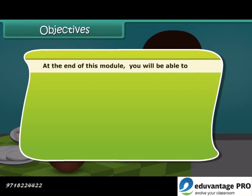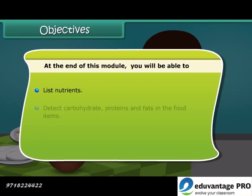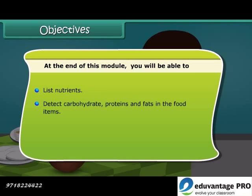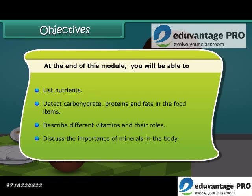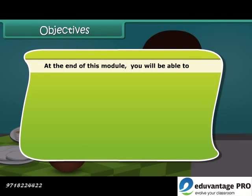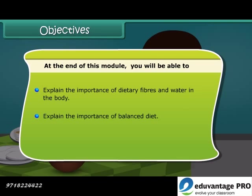Dear friends, at the end of this lesson you'll be able to list nutrients and detect carbohydrates, proteins, and fats in food items. You will also be able to describe different vitamins with their roles, discuss the importance of minerals in the body, explain the importance of dietary fibers and water in the body, explain the importance of balanced diet, and define deficiency diseases.